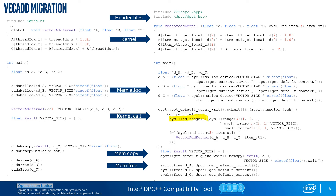Since the getDefaultQueue wait function explicitly calls wait to complete all tasks in the queue, the memcpy call is generated after the submission of the command group, ensuring the data is updated before we copy it to the host. We can then finally deallocate the memory via the free functions.